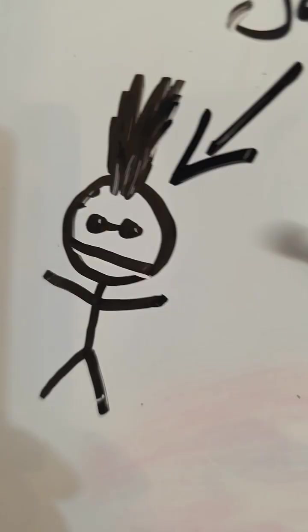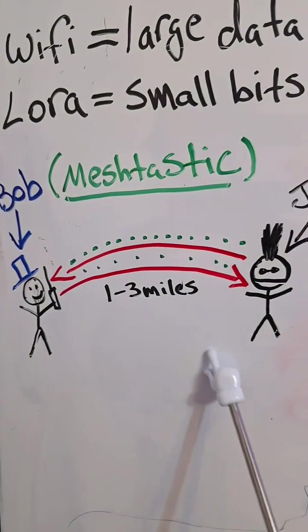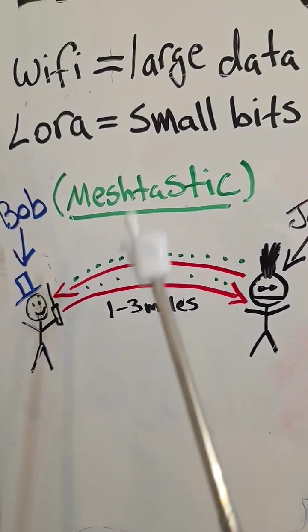Now this is Jasper. Jasper has a mohawk. Now the distance between Bob and Jasper is 1 to 3 miles. Despite the distance, they can send each other text messages over the Meshtastic network.